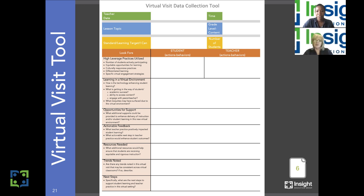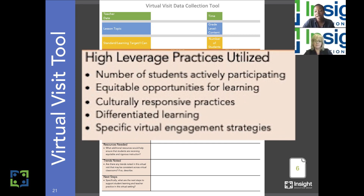Let's begin to examine the look-fors. The first look-for is high leverage practices utilized. Some things to observe in this category include the number of students actively participating, equitable opportunities for learning, any culturally responsive practices used, how the teacher is differentiating learning for diverse learners, and any specific virtual engagement strategies the teacher is employing to keep students on track and engaged. To the right of that, we have two columns: student actions and behaviors, and teacher actions and behaviors.